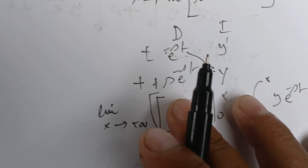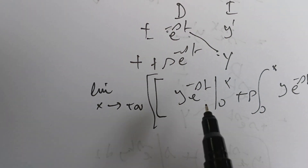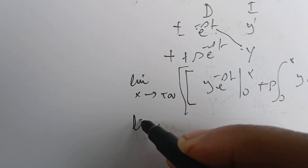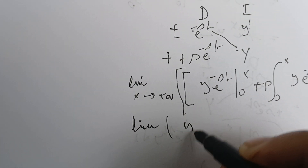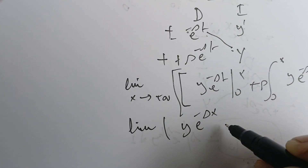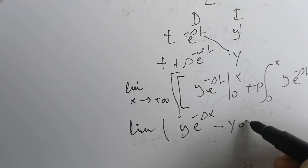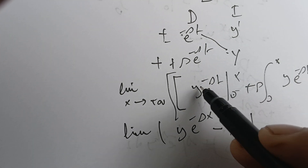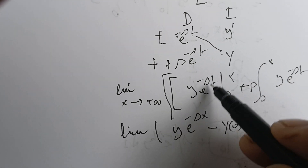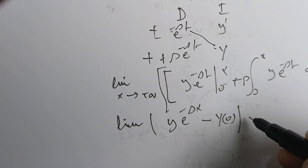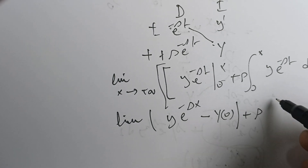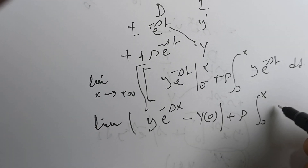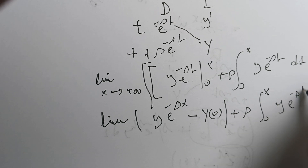One key step is to first plug in X. We get Y(X) e^{-sX} minus Y(0) — because when X is zero, we get Y(0) and e^0 which is one. Then we have S times the integral from zero to X of Y e^{-st} dt.